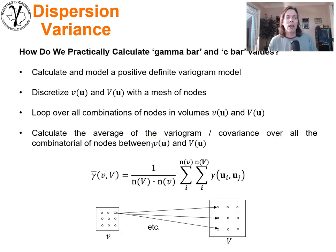Now how do we practically calculate gamma bar values? There's not a closed form solution we can use in general to calculate this. In fact, what we do is use a numerical form of integration. Pretty straightforward: we just do a discretization of the two volumes with a mesh of nodes, and then we can loop over all the combinations of the nodes within the two volumes.